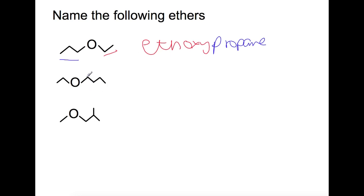For the second example we have one two three four carbons so this is going to be based on butane with a branch of two here so ethoxy again.